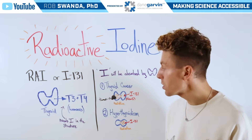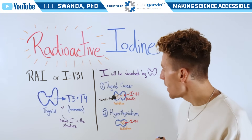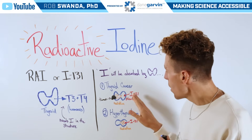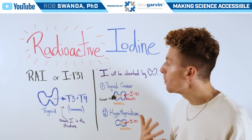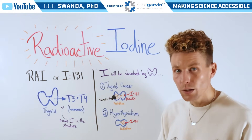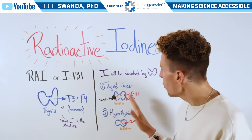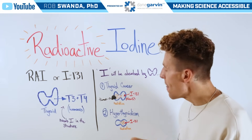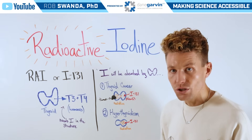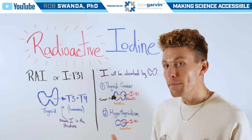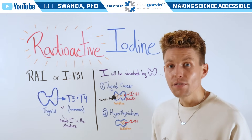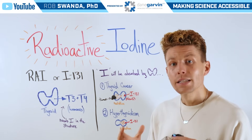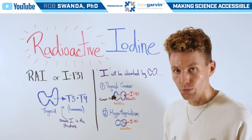Radioactive iodine can be used first for thyroid cancer treatment. When a tumor is on the thyroid, iodine-131 treatment will be given to an individual in either liquid or pill form. It will be localized to the thyroid, where it will be absorbed and then start emitting radiation for a few days. By emitting that radiation, it's going to kill off thyroid cells — both healthy and cancerous — to help reduce the size of that tumor.